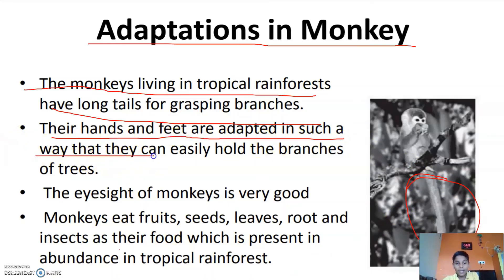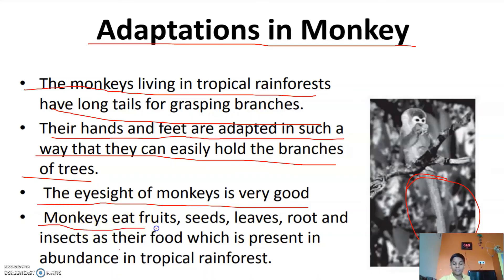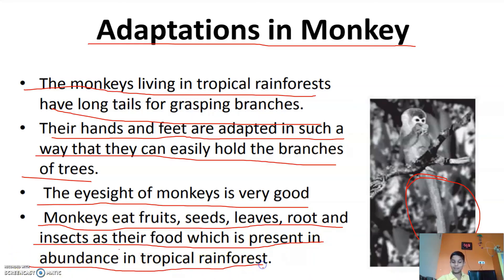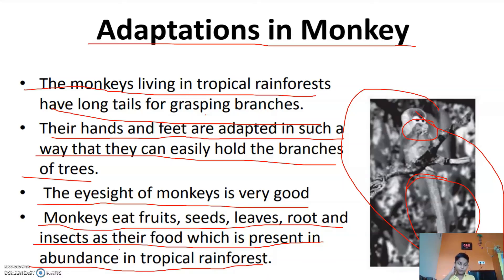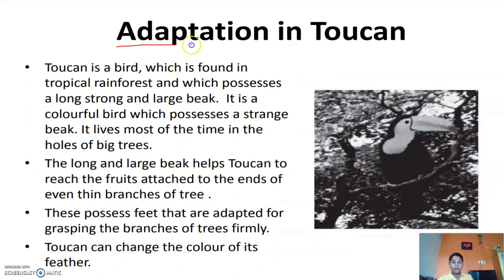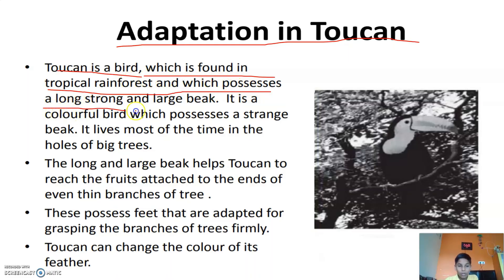Now let's see the adaptations of monkeys. The monkey living in the tropical rainforest has a long tail for grasping branches. Their hands and feet are adapted in such a way that they can easily hold the branches of trees. The eyesight of monkeys is very good. Monkeys eat fruit, seeds, leaves and insects as their food, which is present in abundance in the tropical forest.